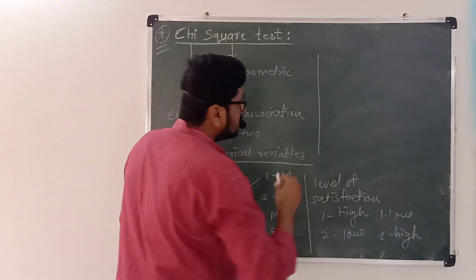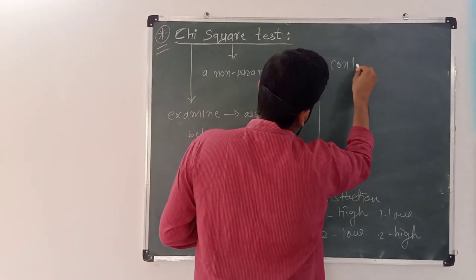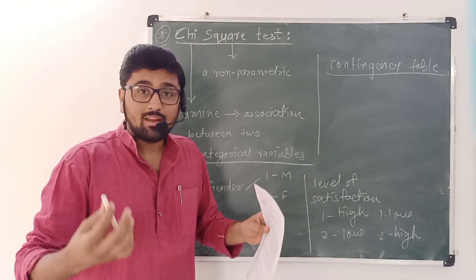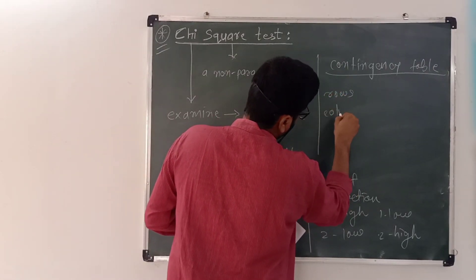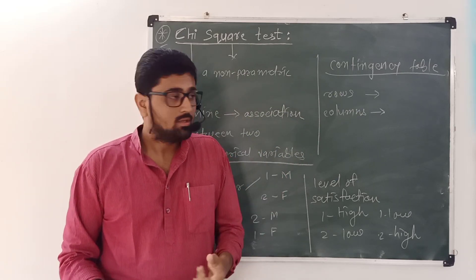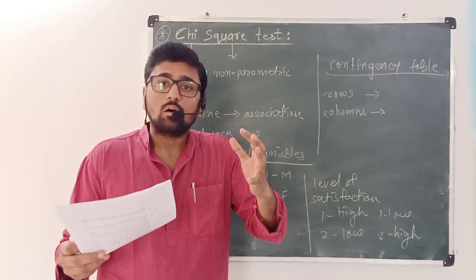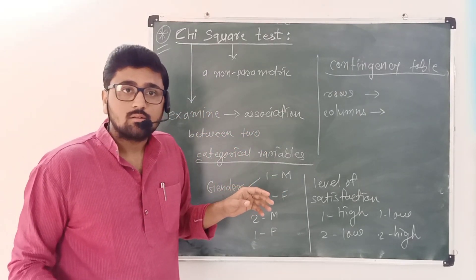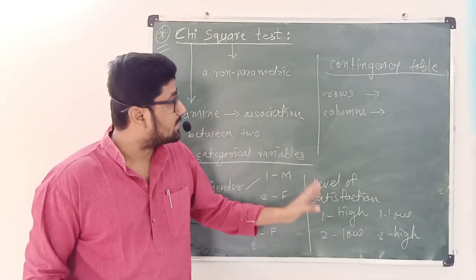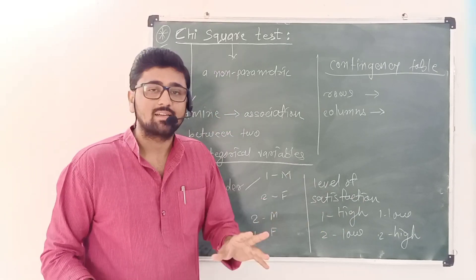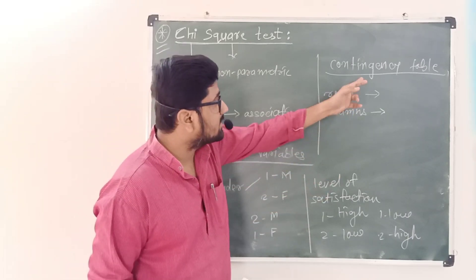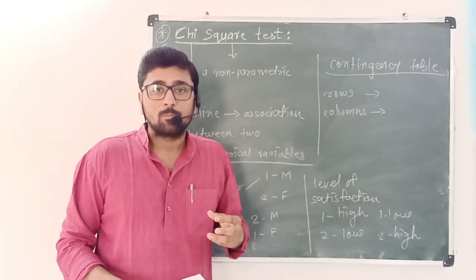In the chi-squared test, the data is displayed in a contingency table. When we have a table, we have rows and columns. Each row shows the categories of one variable and each column shows the categories of another variable. For example, if gender is displayed row-wise, each row shows the categories of gender; if level of satisfaction is written column-wise, each column shows the categories of level of satisfaction. The data must be in a contingency table to perform the chi-squared test.